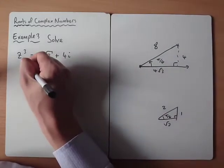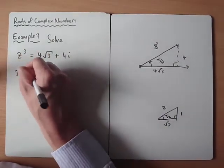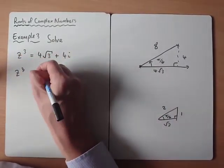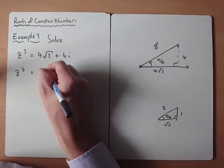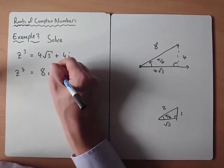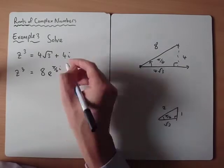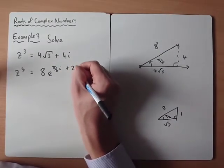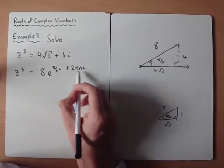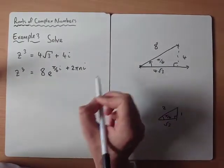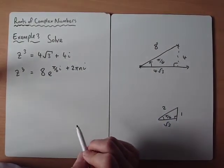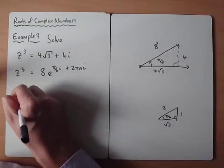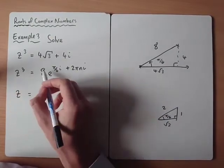So we're going to write, first of all, in exponential form, this is equivalent to 8e to the π over 6i, plus 2πni. You've got to remember to do this, because then when we cube root, we'll get our 3 solutions that we're looking for.